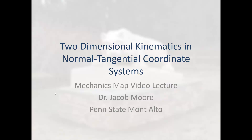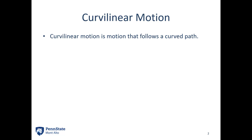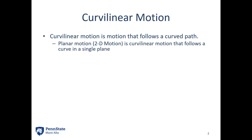Hello. For today's video lecture, we're going to be talking about two-dimensional kinematics using the normal tangential coordinate system. We are still talking about curvilinear motion, just like we were with the rectangular coordinate system. Curvilinear motion is any motion that follows a curved path. Planar motion in 2D is any motion that follows a curved path where the curve lies in a single plane.